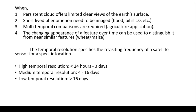The fourth situation is that the changing appearance of a feature over time can be used to distinguish it from near-similar features, like wheat and maize, or any flowering crop or orchard. If it is a growing or sowing season, you have a different image. When it is the flowering season, you have a different image. In the fruiting season of a crop, you again have a different image. So within a particular season, you can take images at different spans and use temporal resolution for your study.